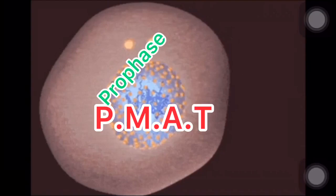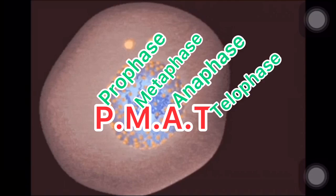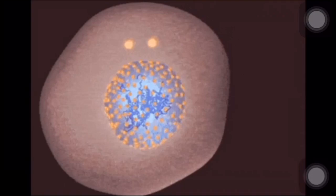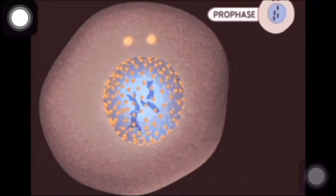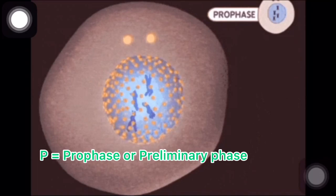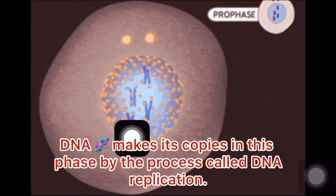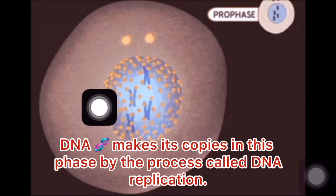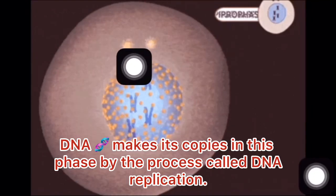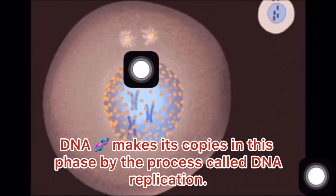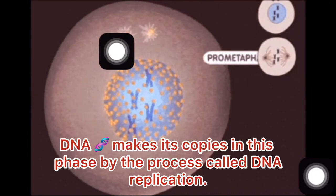The first phase is prophase, which means preliminary phase. You can see in this phase the chromatin becomes thickened and they are visible. Nuclear membrane disappears and the centriole duplicates and they go to opposite sides of the cell. And then pro-metaphase starts, which is also part of metaphase.